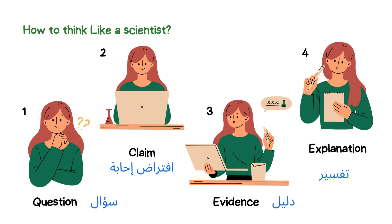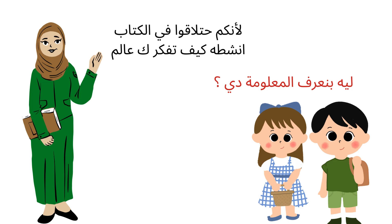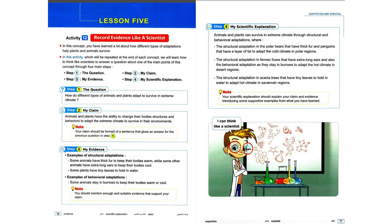So again, we have four steps in how to think like a scientist: first we have a question; then we put a claim — an answer for this question; then the third step, which is evidence; and the last step, which is the explanation. You will see activities about how to think like a scientist in your book — this is from the El Muasir book.